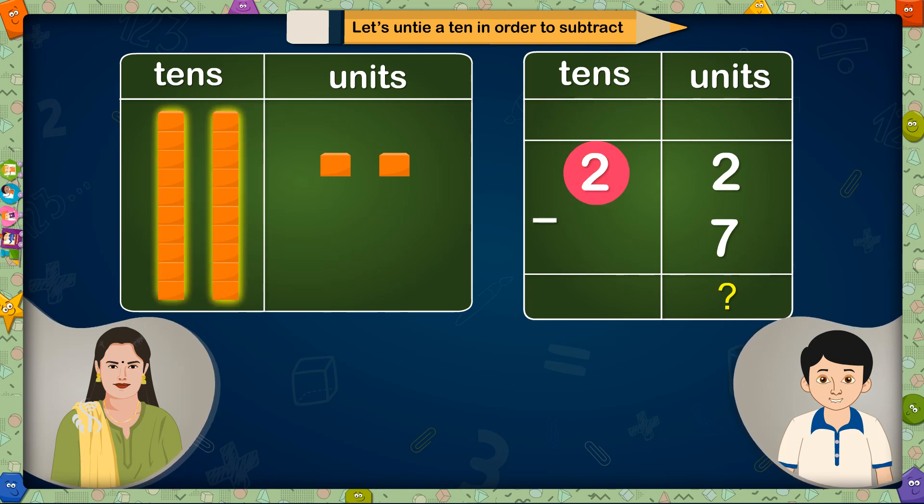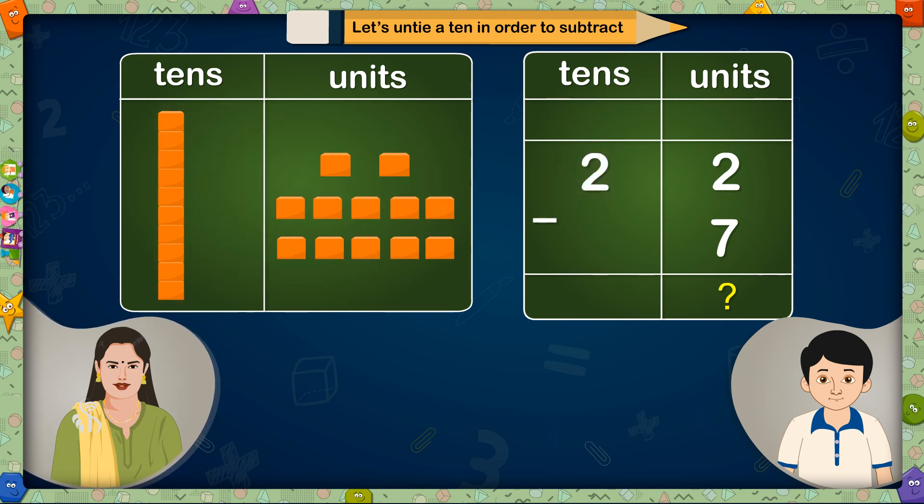We will have to untie 1 ten from these 2 tens. Right! How many units will be there after untying 1 ten? And how many tens will be left? There will be 10 plus 2 equals 12 units altogether, and only 1 ten will be left if we untie 1 ten from 2 tens.